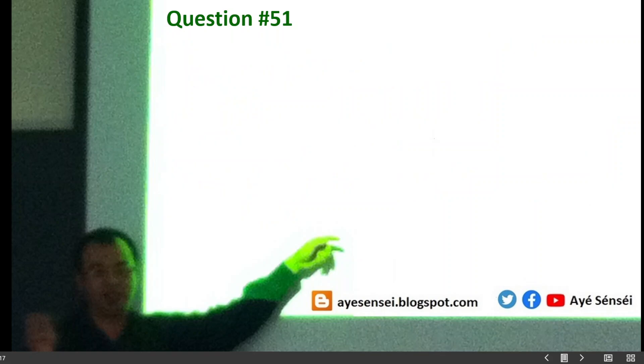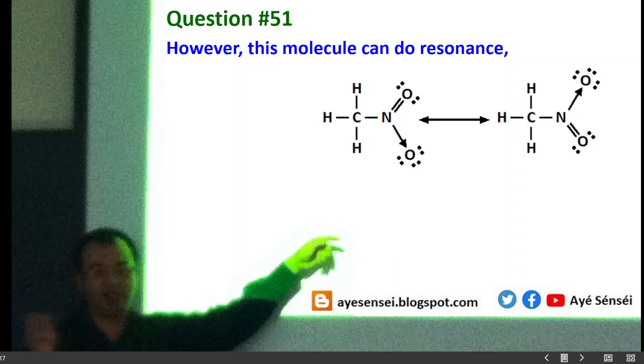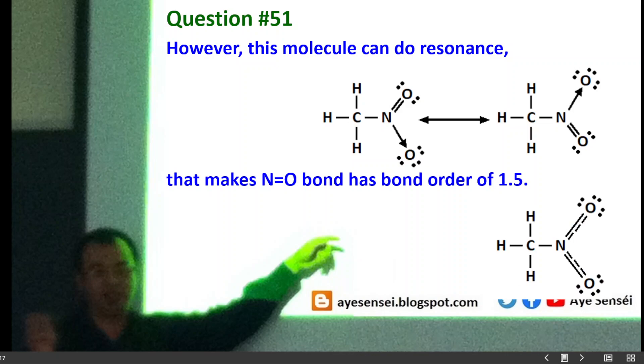However, if we analyze further again, this molecule can also do resonance as well. So that makes the structure can be drawn like this. And then, for simplification, the bond order becomes 1.5. So this means that the bond length between N atom and O atom, they are having the same bond length. So option A is wrong.